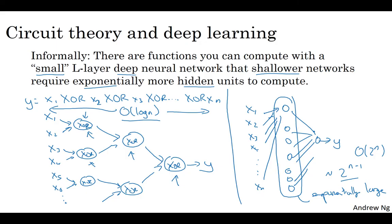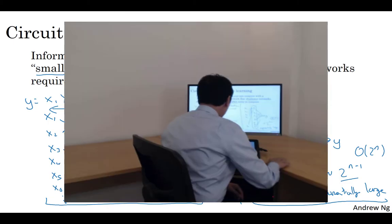So I hope this gives a sense that there are mathematical functions that are much easier to compute with deep networks than with shallow networks. I have to admit, I personally found the result from circuit theory less useful for gaining intuitions. But this is one of the results that people often cite when explaining the value of having very deep representations.